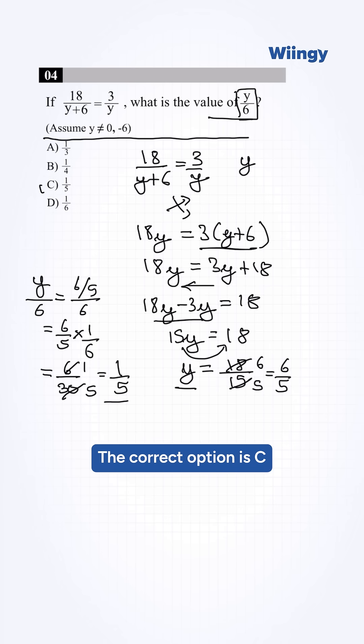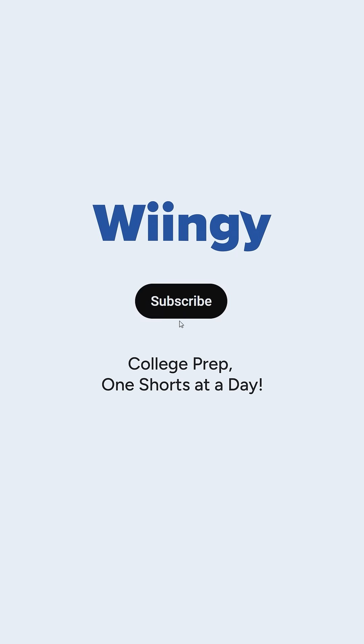So this is our answer. The correct option is C, 1 by 5. Need more practice problems? Subscribe.